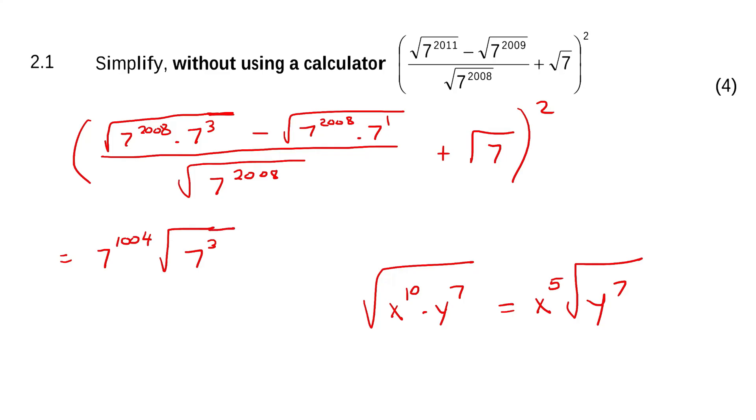Some people might say, sir, can't we change this to 7 to the 2 and 7 to the 1? Yes, you can. And maybe that would be a better approach, but I can't tell from the beginning. I need to start solving and then it'll start becoming clearer as I start solving what the best option is.